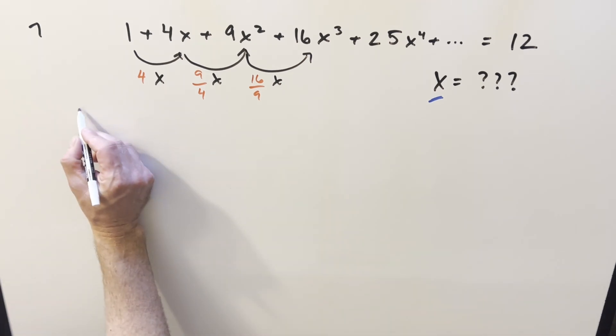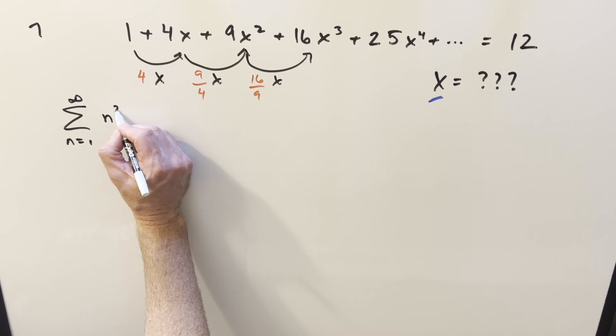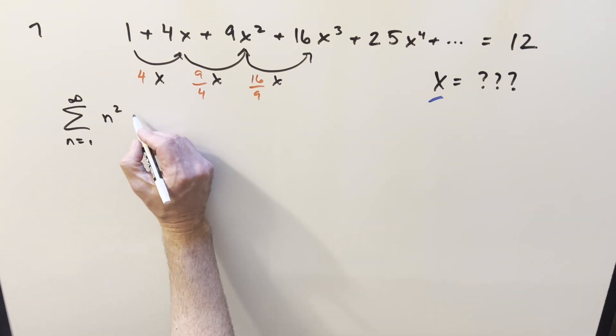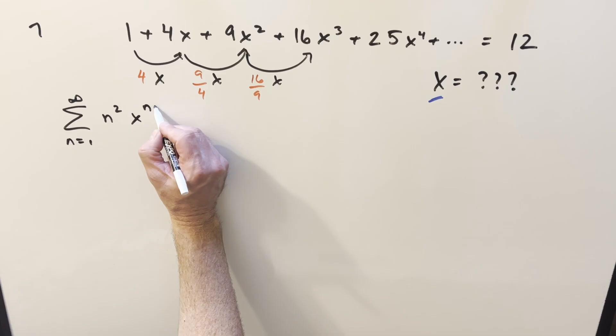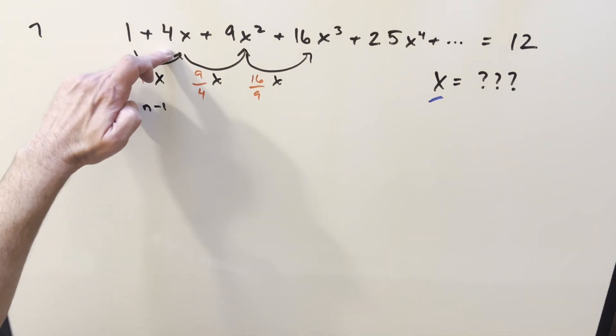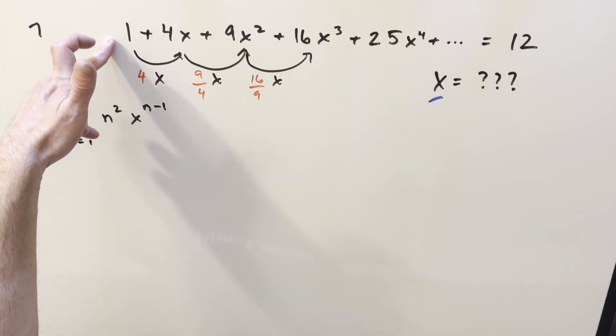Putting this into the sum notation, what I can do is write this as the sum from 1 to infinity. Notice the coefficients on everything is always going to be n squared. And then the x term is almost x to the n, but it's actually 1 less. So what will work is it will be x to the n minus 1 here. For example, when n equals 2, you get the 4, and this becomes just an x. So we have this as a nice compact way to represent this whole thing.